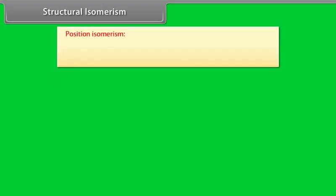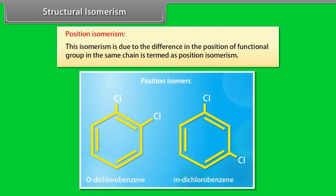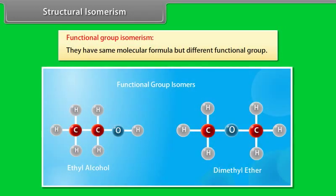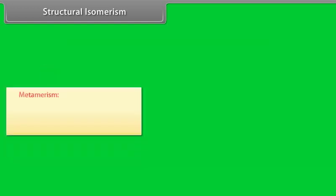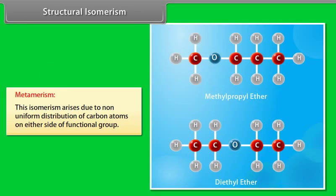Position isomerism is due to the difference in the position of functional group in the same chain. Functional group isomerism: compounds have same molecular formula but different functional groups. Metamerism arises due to non-uniform distribution of carbon atoms on either side of functional group.